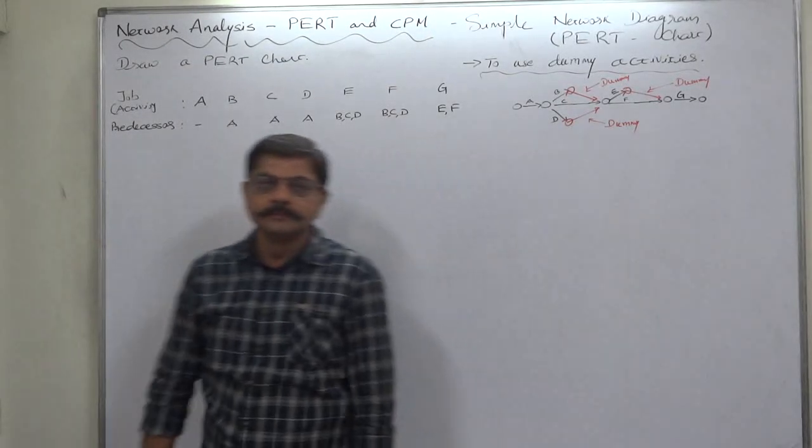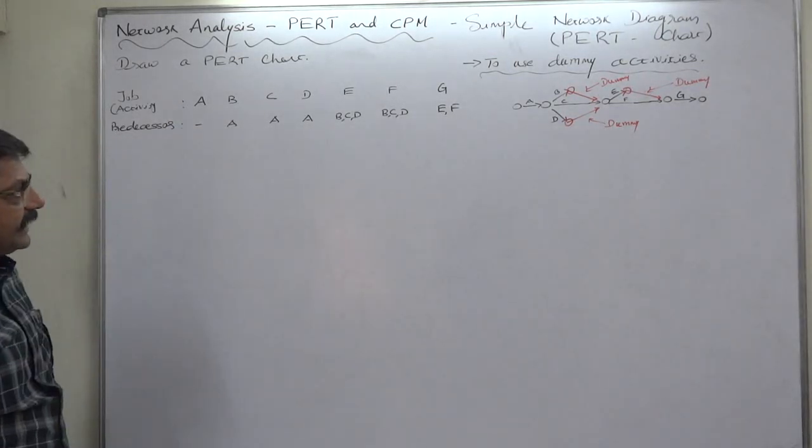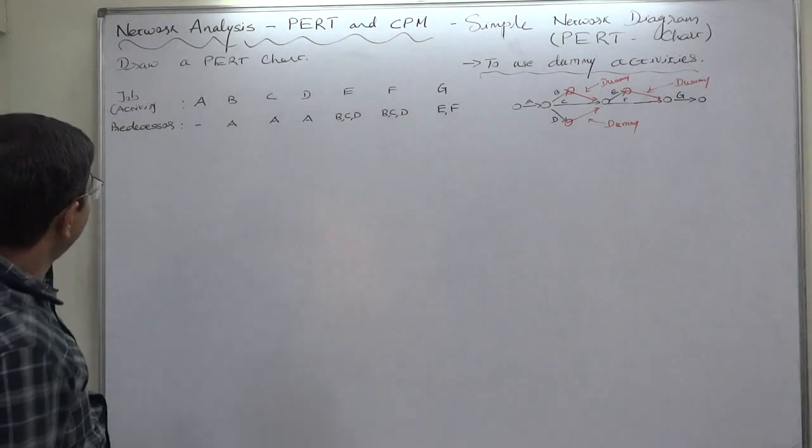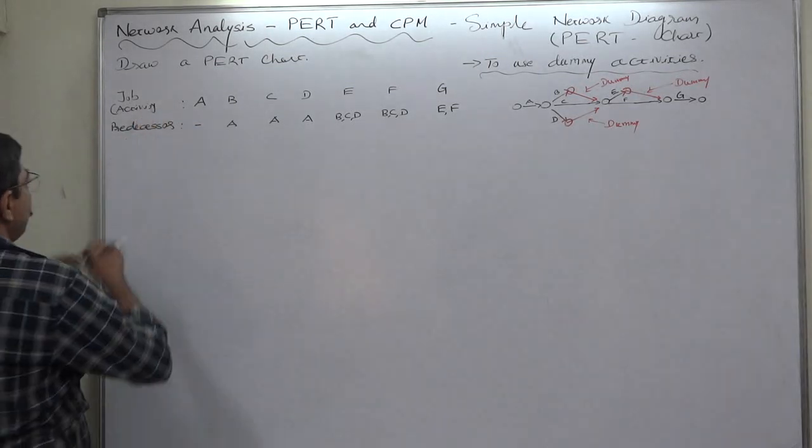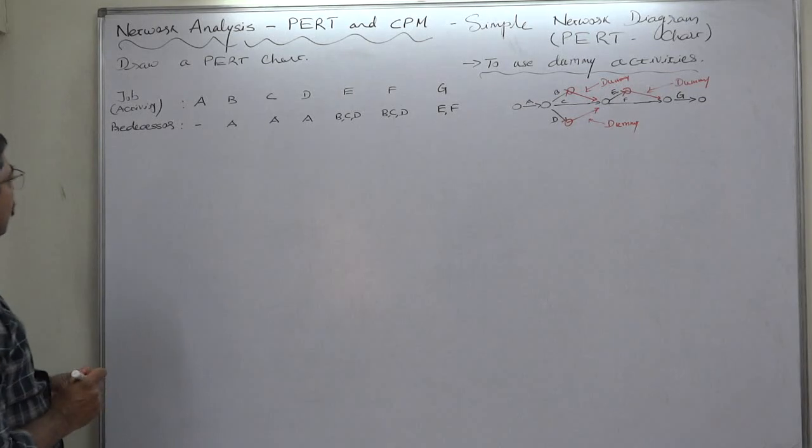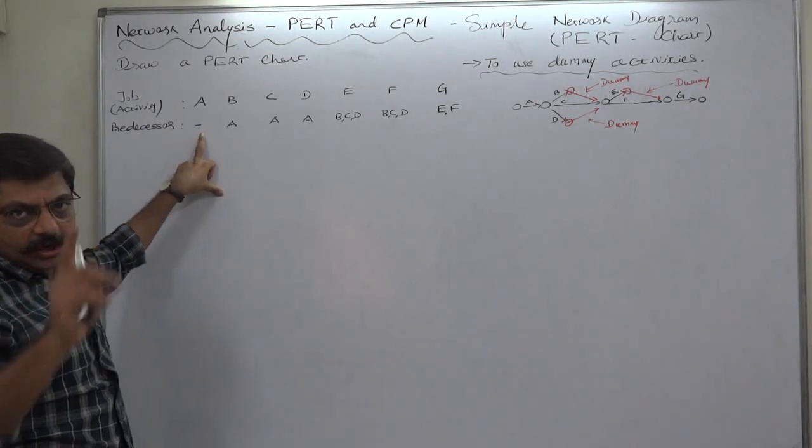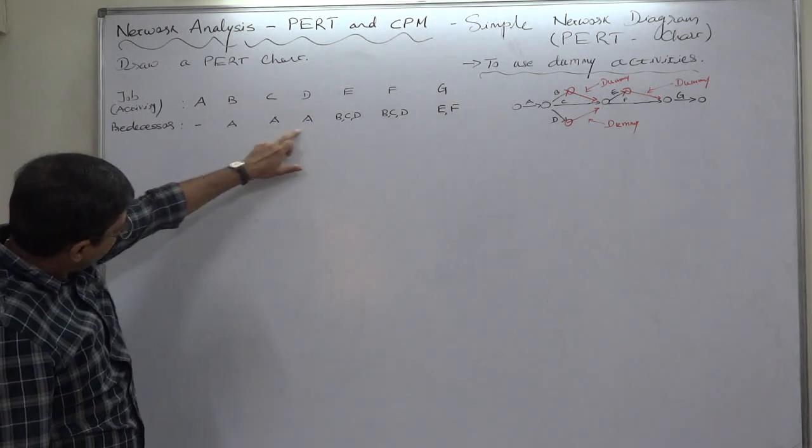Hello, namaskar and welcome to network analysis PERT and CPM. Next case is drawing a simple network diagram. First, what is the case? Draw a PERT chart where activities are A, B, C, D, E, F, and G with their predecessors. A has no predecessor, meaning A is the initial activity. B, C, and D all have A as predecessor.